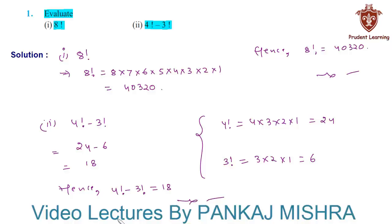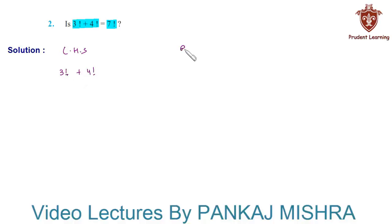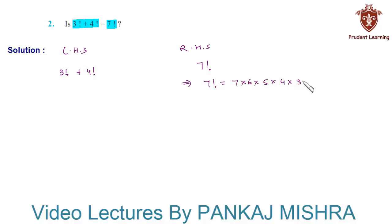The next problem is: is 3 factorial plus 4 factorial equal to 7 factorial? To solve this we will simplify the left-hand side and right-hand side separately. On the left-hand side we have 3! + 4!, and on the right-hand side we have 7!. We know that 7! is the product of the first seven natural numbers: 7 × 6 × 5 × 4 × 3 × 2 × 1, which equals 5,040.